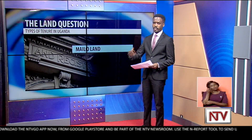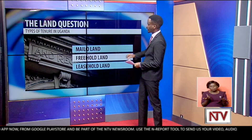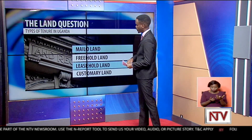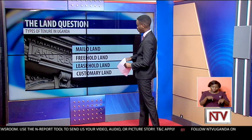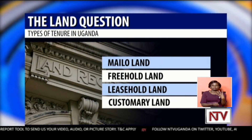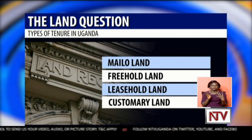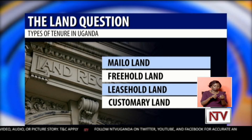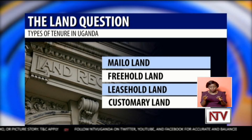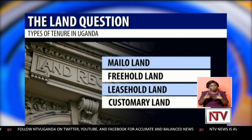Let's take it to the magic board and try to understand what actually constitutes this land question. What are the types of tenure in Uganda? There are actually four as it stands right now: it could be Mailo land, it could be freehold land, it could be leasehold land, or it could be customary land.